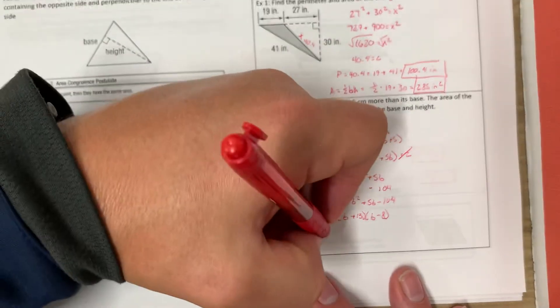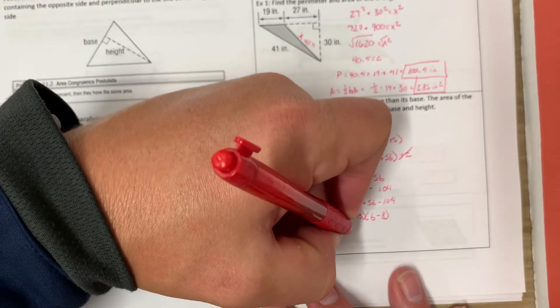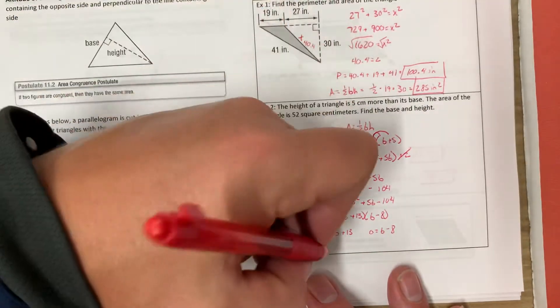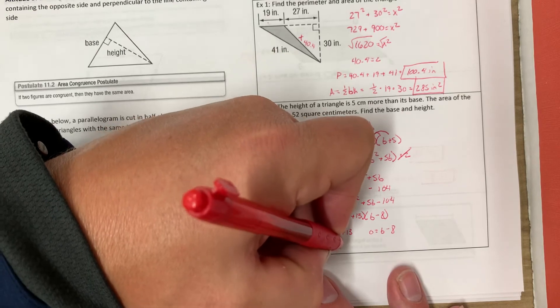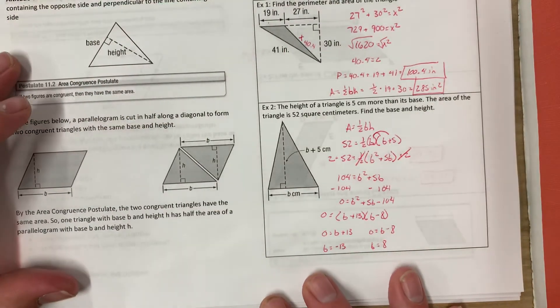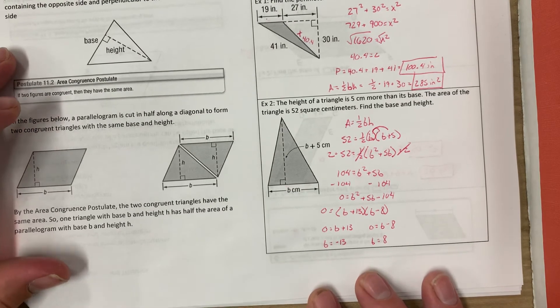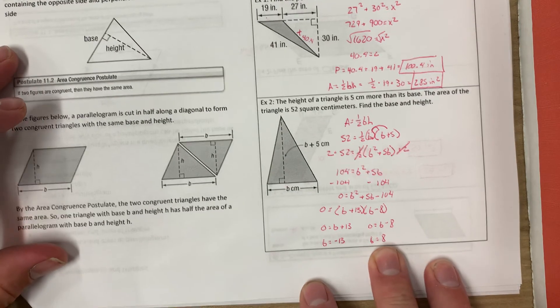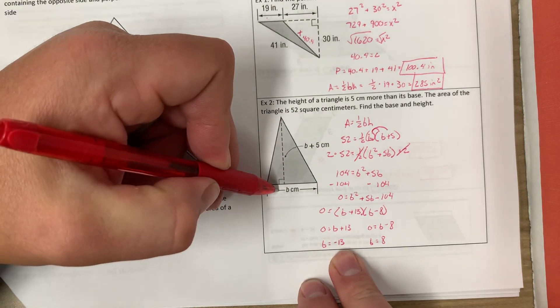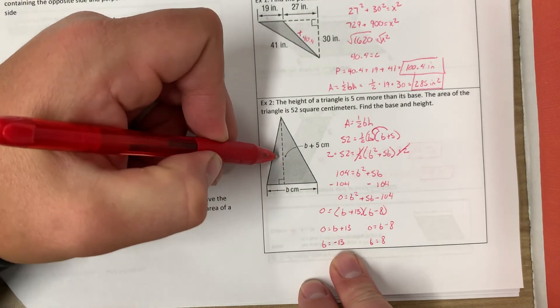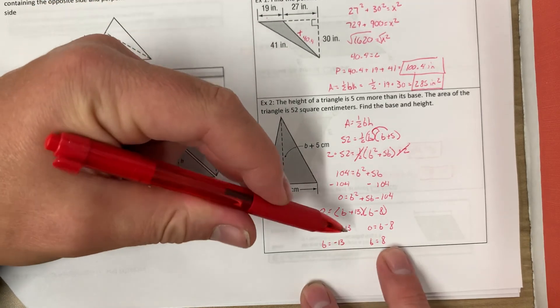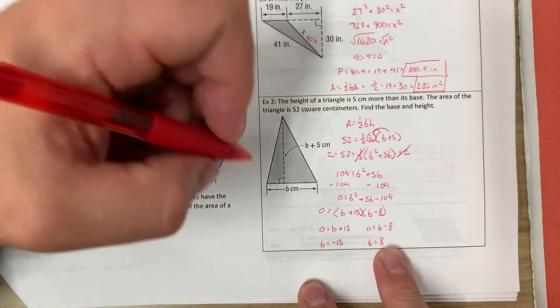So we've got to solve zero equals B plus 13 and zero equals B minus 8. So I'd find that B is negative 13 or B is 8. In this equation, we're going to use B equals 8, because if we use B is negative 13, that would make the base negative 13 centimeters and the height negative 8 centimeters, which does not make any sense. So therefore we're going to use the positive number 8 as B.